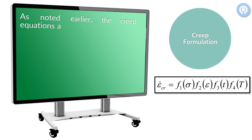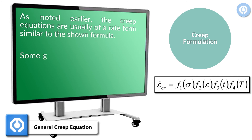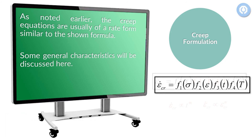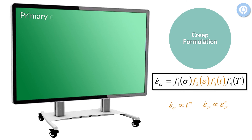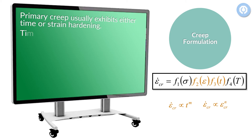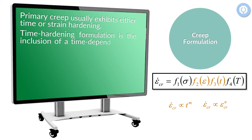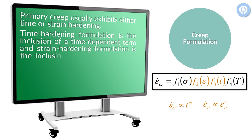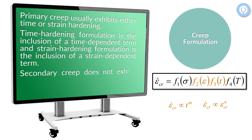As noted earlier, the creep equations are usually of a rate form similar to the shown formula. Primary creep usually exhibits either time or strain hardening. Time hardening formulation includes a time-dependent term, and strain hardening formulation includes a strain-dependent term. Secondary creep does not exhibit time or strain hardening, and the creep strain rate is usually constant.